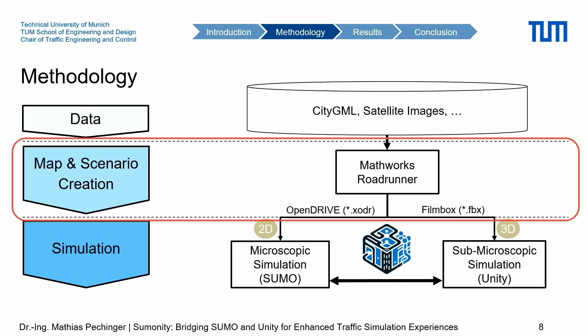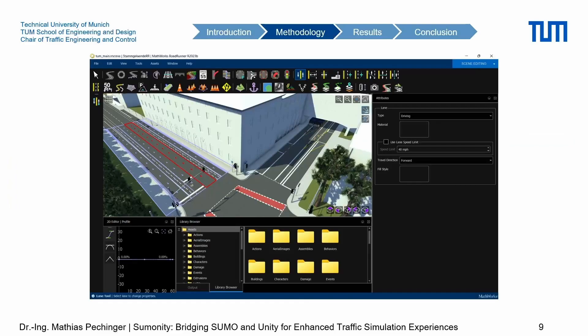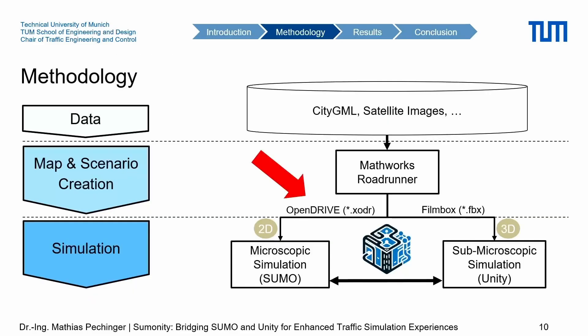Next is MathWorks Roadrunner — many people know it. This product is quite nice. We can load in level-of-detail-3 buildings, export them to OBJ files, drop them in, align with satellite images, and then draw road networks on top of the satellite images. This involves a lot of manual labor but in the end you get a really accurate physical digital twin. From there we can export an OpenDrive network which aligns in SUMO, and an FBX file to align everything with Unity.